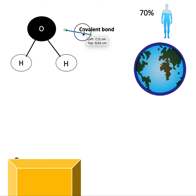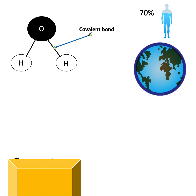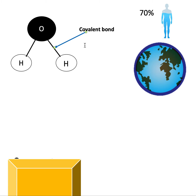This is a covalent bond — it's what holds the oxygen and hydrogens together and it's a very strong bond, basically impossible to break. A covalent bond happens between two non-metals. We know oxygen and hydrogen are gases, but when they bond they form a liquid because this bond is so strong.